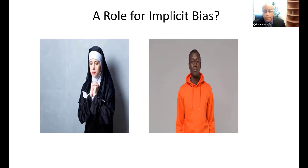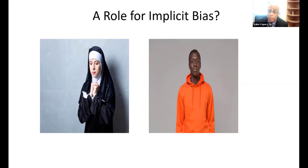Now imagine I am a law enforcement officer called to the scene of a disturbance. When I arrive and see a nun, I probably smile and say, 'Good morning, sister. How can I help you today?' On the other hand, if I arrive and there's a young Black man in a hoodie, because of my unconscious association, I just might approach him with my hand on my firearm, yelling and barking orders. Yet that night at the dinner table, I say I had a wonderful day treating everybody fairly — because in my mind, I really have. That is the power of implicit bias.